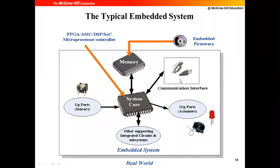Coming to the core of a system — what do you mean by core, what does it include? The system core can be an FPGA, which you have used in the SDL subject — Field Programmable Gate Array. It can be an Application Specific Integrated Circuit (ASIC), or it can be a DSP processor. It can be an SoC — System on Chip — or it can be a microprocessor or a microcontroller.